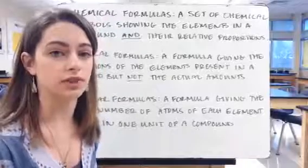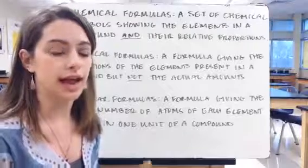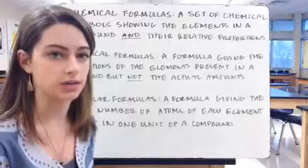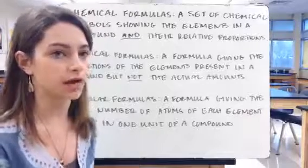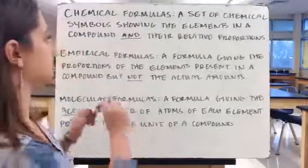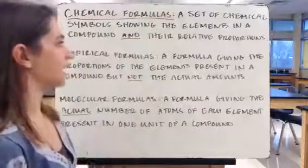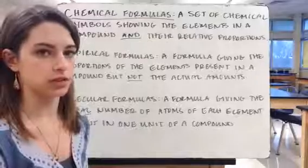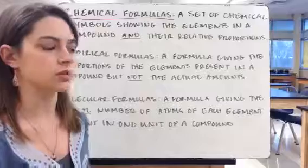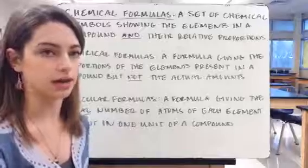Now that we know how to convert grams into moles and find moles of different elements, we're going to use that and our ability to calculate molar mass to determine chemical formulas of different compounds. A chemical formula is a set of chemical symbols showing the elements in a compound and their relative proportions. The symbols tell us what elements are there, and the numbers tell us how many there are.